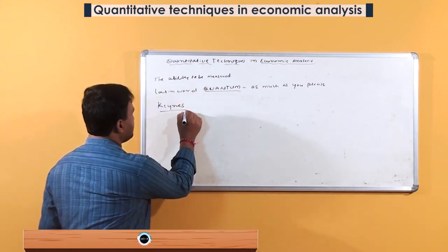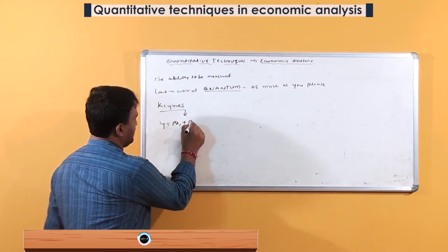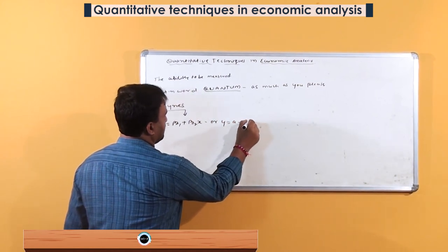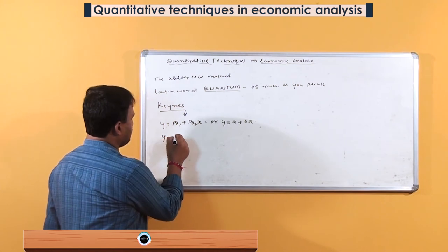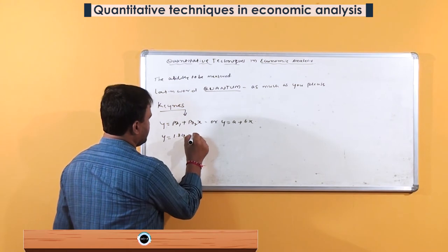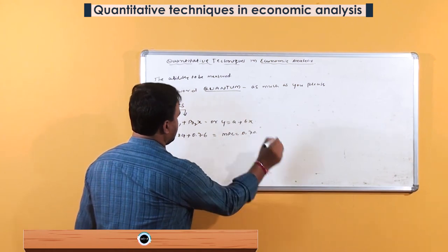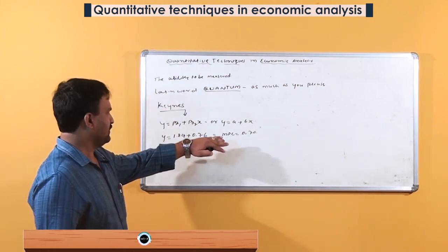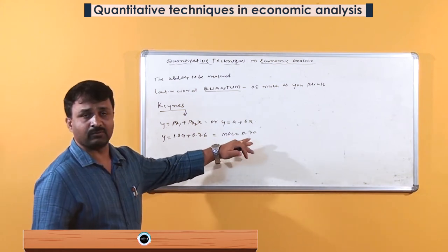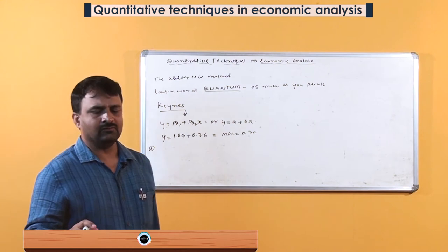We can explain this mathematically as y = β₁ + β₂x, or y = a + bx, or y = 1.84 + 0.76x, where MPC = 0.70. After calculation we get that when income increases by 1 rupee, consumption expenditure increases by 0.70. This is how we can quantify qualitative data.